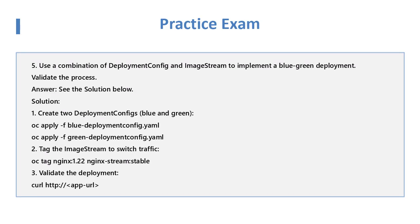Question 5: Use a combination of DeploymentConfig and ImageStream to implement a Blue-Green Deployment and validate the process. Solution: Create two Deployment Configs — Blue and Green — using 'oc apply -f blue-deploymentconfig.yaml' and 'oc apply -f green-deploymentconfig.yaml'. Tag the ImageStream to switch traffic with 'oc tag nginx:1.22 nginx-stream:stable'. Validate the deployment using curl against the application endpoint.